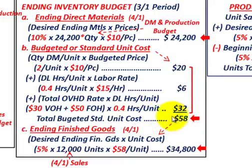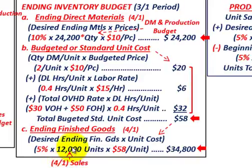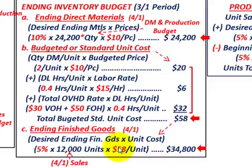For ending finished goods, we take our desired ending finished goods — 5% of April's sales budget of 12,000 units — times the $58 unit cost. So 5% × 12,000 × $58 = $34,800 in ending finished goods inventory.